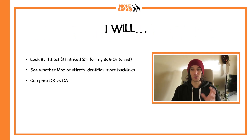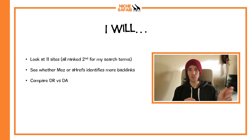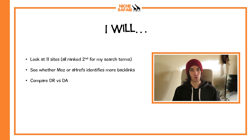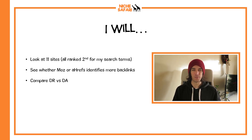What I'm going to do is look at 11 sites by typing in random keywords and looking at the second-ranked page on Google for each of 11 different keywords. I'll write down the DA, the DR, and the number of backlinks each crawler found — to see which crawler found more backlinks and whether DR and DA are comparable metrics, so you can substitute one for the other.